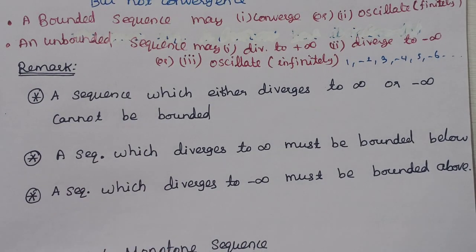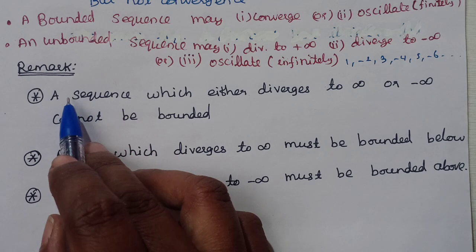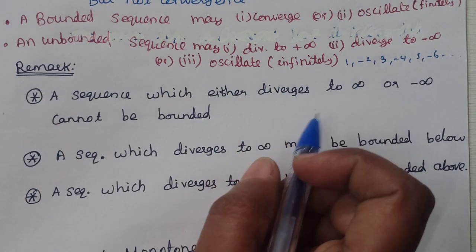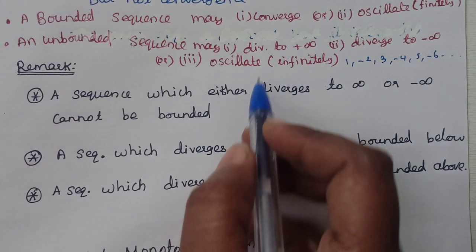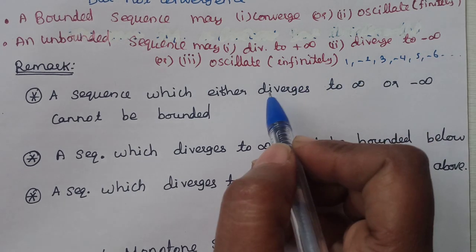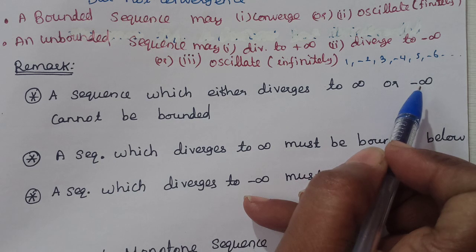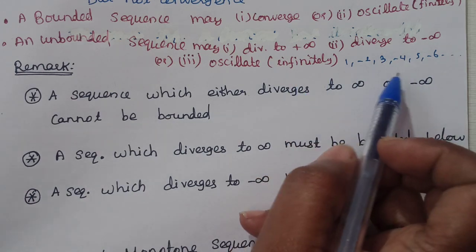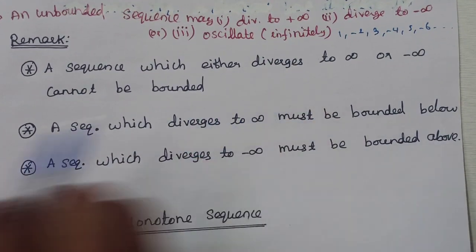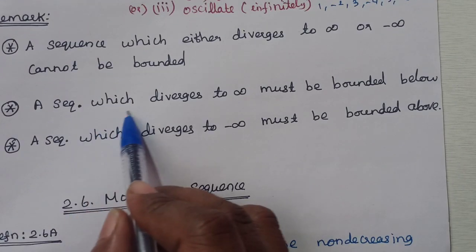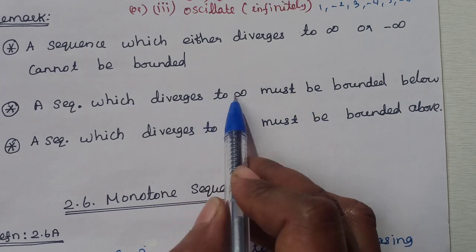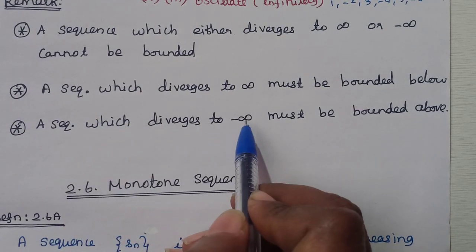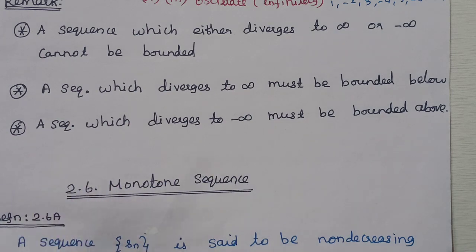Final concept question: can a sequence that diverges to infinity or minus infinity be bounded? No — if a sequence diverges to infinity, it cannot have an upper bound, so it cannot be bounded. If it diverges to minus infinity, it cannot have a lower bound. A sequence which diverges to infinity is not bounded above.